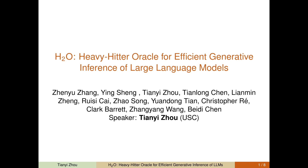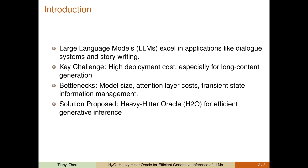Hi, my name is Tian Yizhou, and today I'm presenting our new approach to optimize large language models titled Heavy Hitter Oracle for efficient generative inference. Large language models have made impressive performance in dialogue systems and story writing, but they come with high development costs, especially when generating long content. The primary challenges include the model size and the intensive memory requirements of attention layers, and our solution H2O aims to tackle these issues effectively.